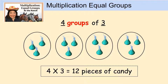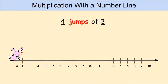Multiplying on a number line is very similar — all we have to do is change one word. We're going to change the word "groups" to "jumps," so we are going to have four jumps of three. That means our rabbit is going to jump four times, and the three tells us how far the rabbit jumps each time. Each jump has to be the same.